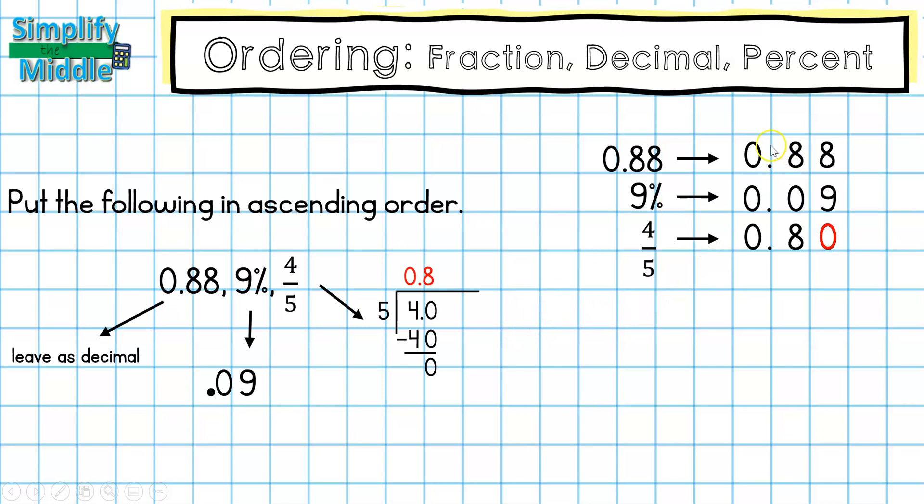Now when I'm looking here, I see they all have zero for the ones place value. In the tenths place value, I can see that this one has zero while these two have eight. Since I'm looking for ascending order, I know that nine hundredths, or nine percent, is going to be my first listed number.